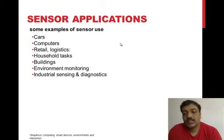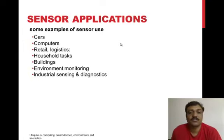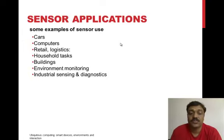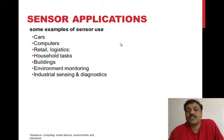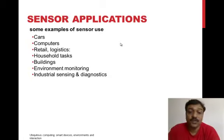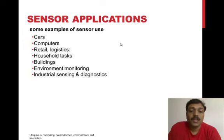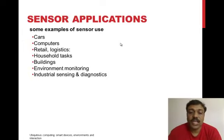There are many applications of sensors: cars have many different types of sensors, computers are loaded with sensors, and sensors are used in retail and logistics management. In buildings, sensors can detect light intensity and control smart room lighting accordingly. Temperature sensors placed in buildings can sense temperature and control the air conditioning system for better environment monitoring and energy control.